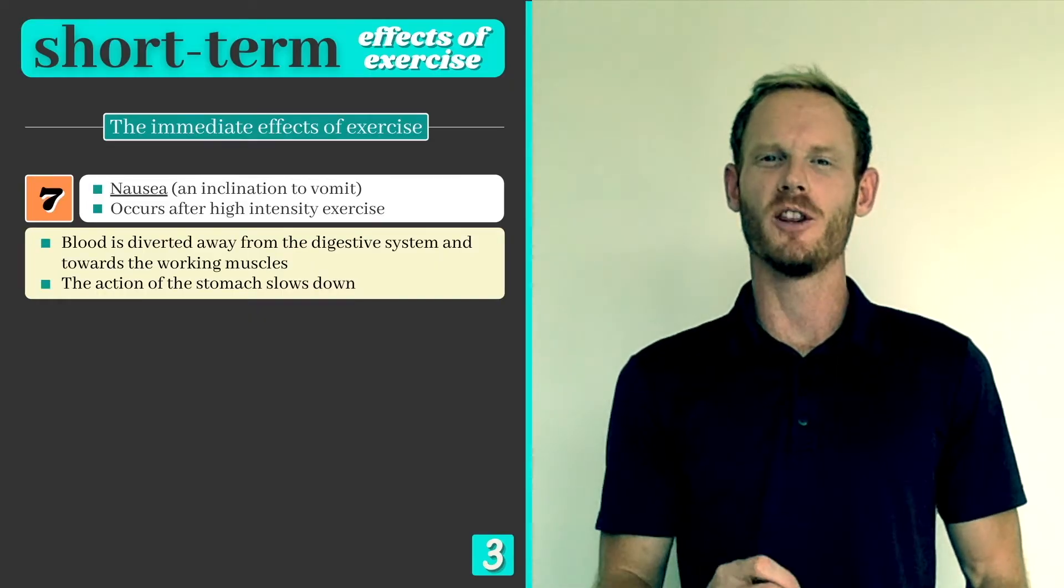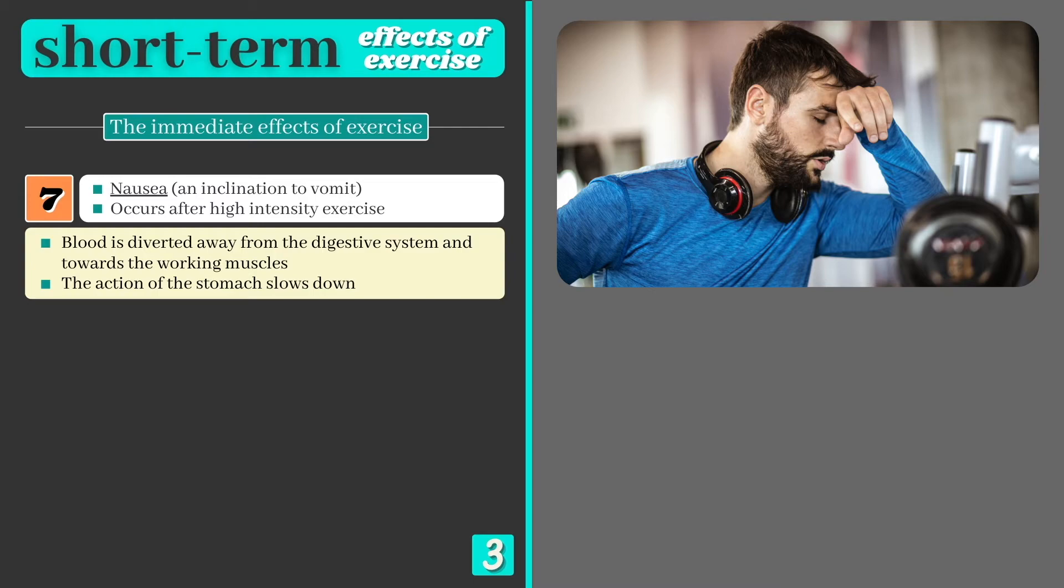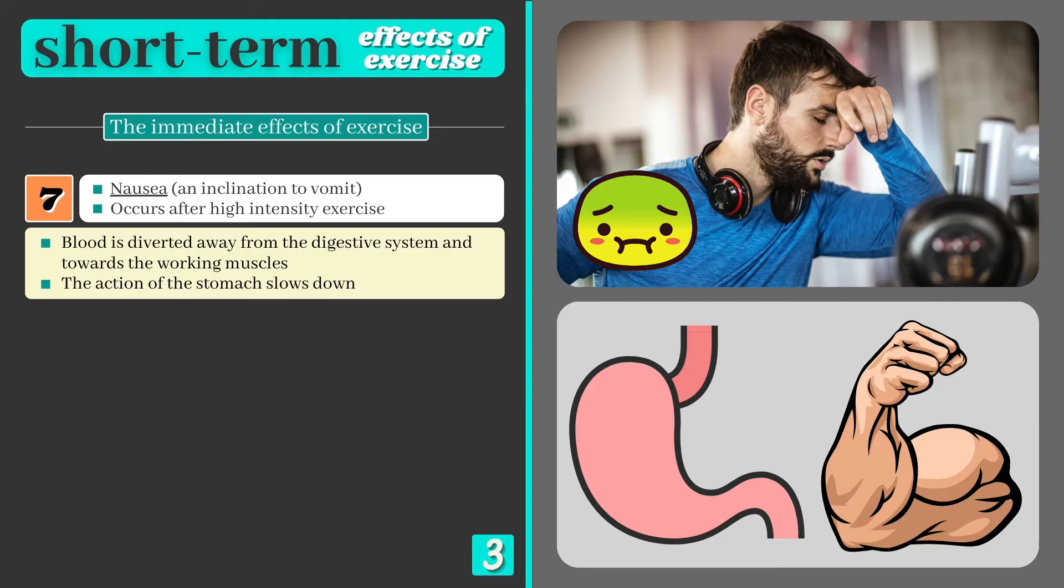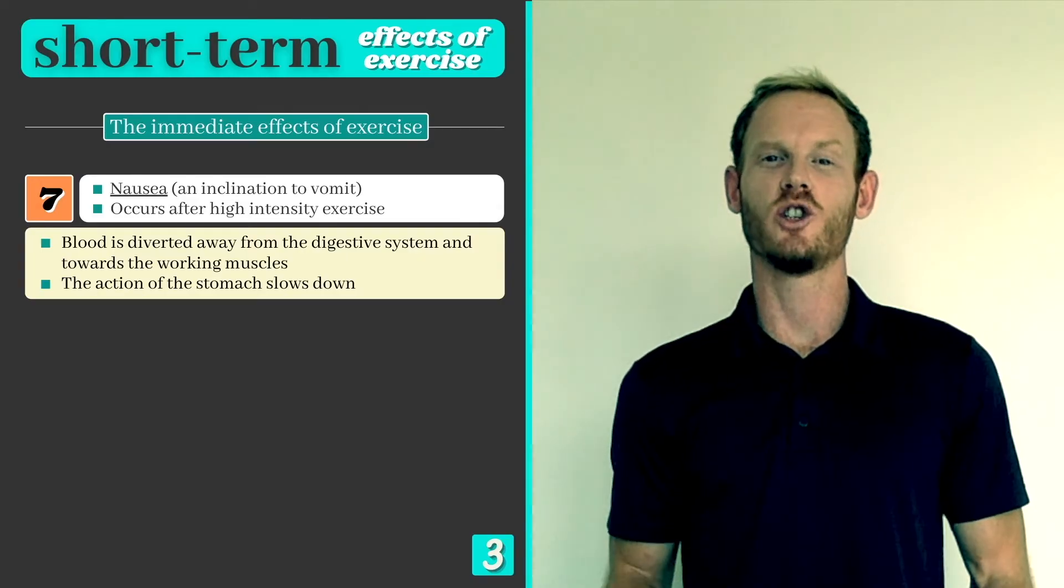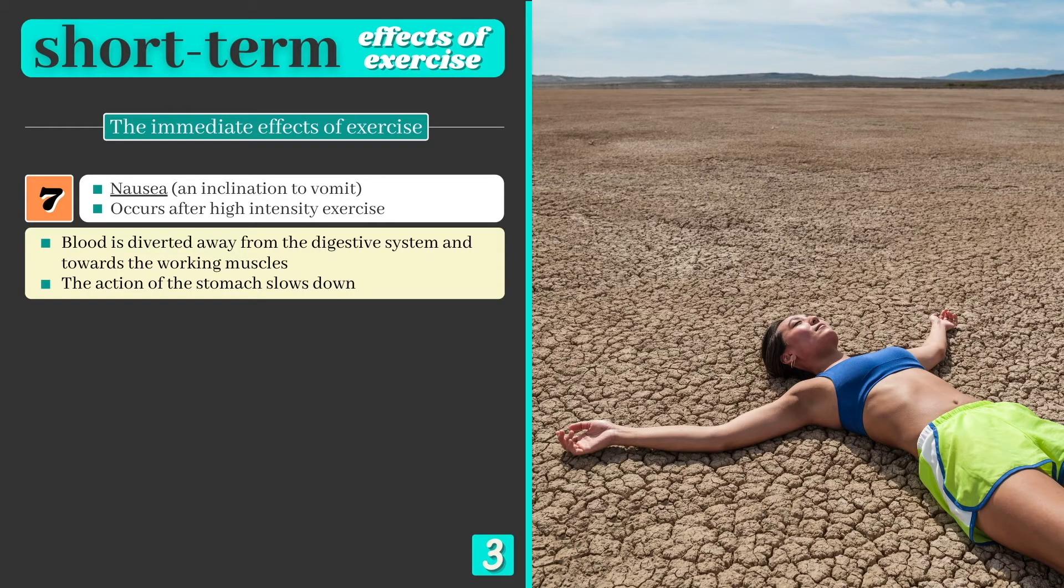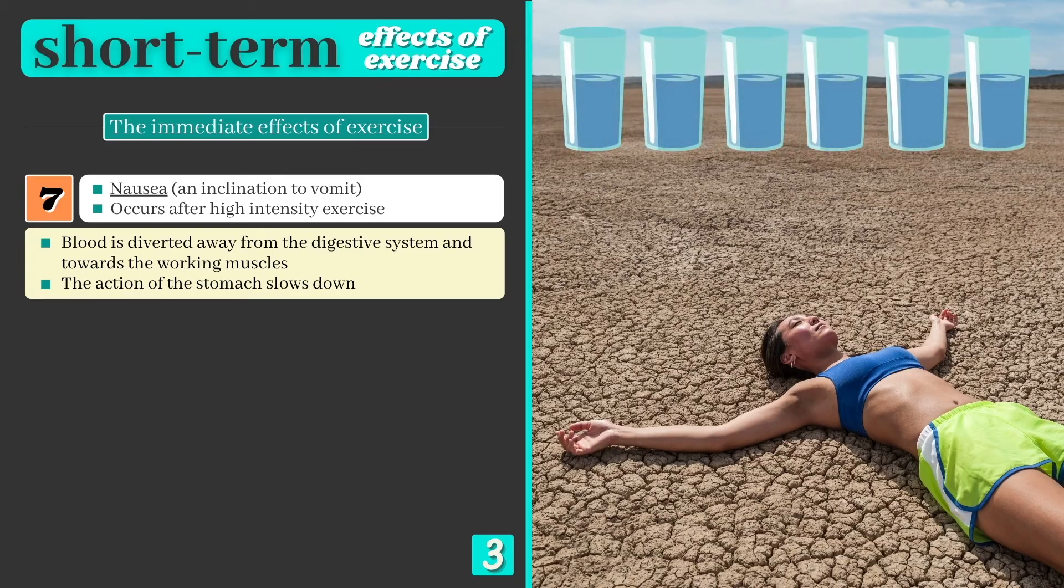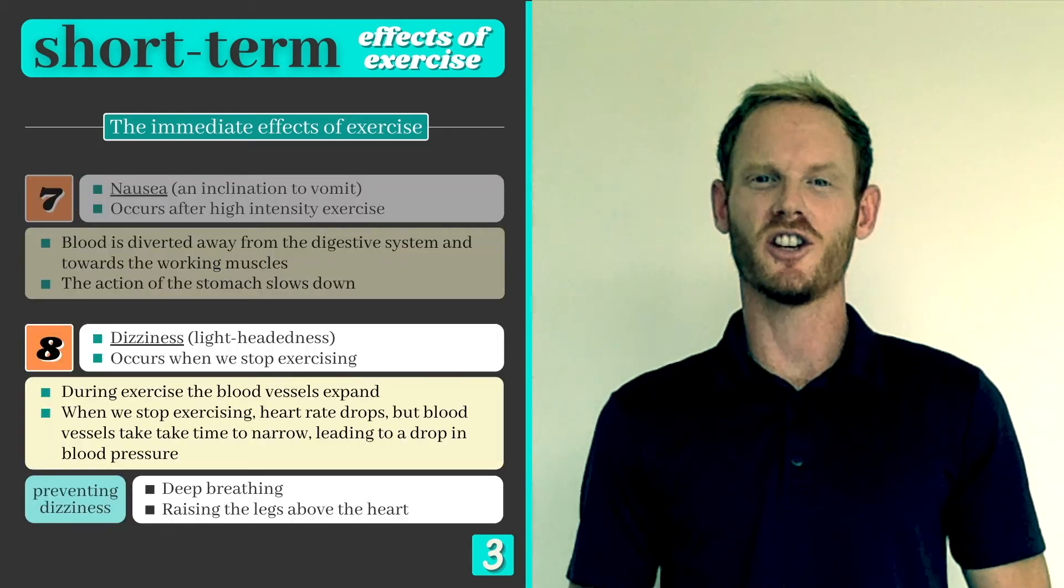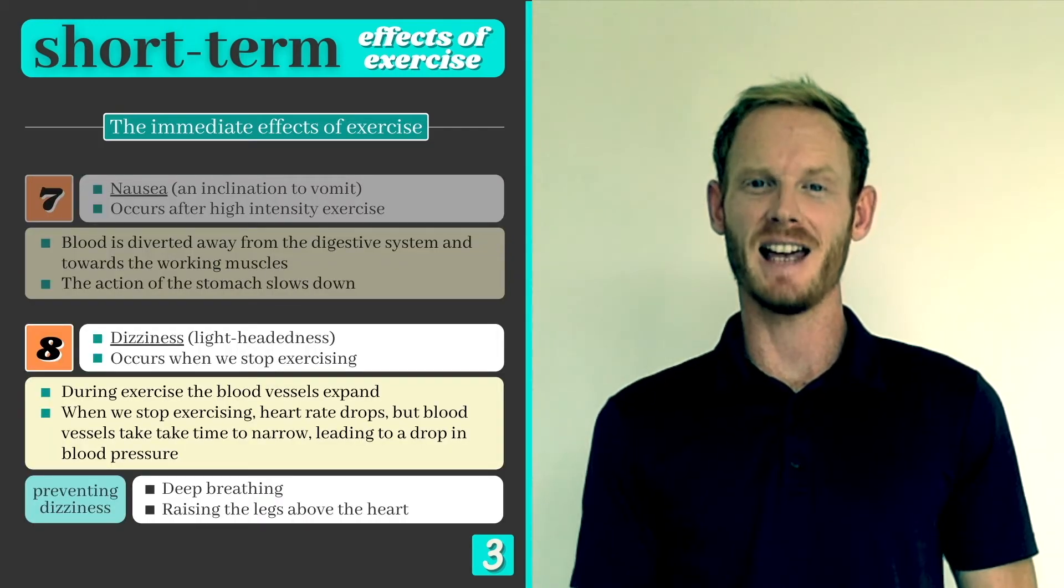Our next effect is less common than those discussed so far, and occurs when we stop exercising, particularly if we overexert our bodies through high intensity work. Nausea, or the inclination to vomit, occurs as blood flow is diverted away from the digestive system and towards the working muscles where the demand for oxygen is higher. Digestion in the stomach slows down and we can feel sick as a result, explaining why you shouldn't eat a large meal if you're planning to be active soon after. Dehydration can also make you feel nauseous, while drinking too much dilutes levels of electrolytes or minerals in your system, preventing them from working correctly.